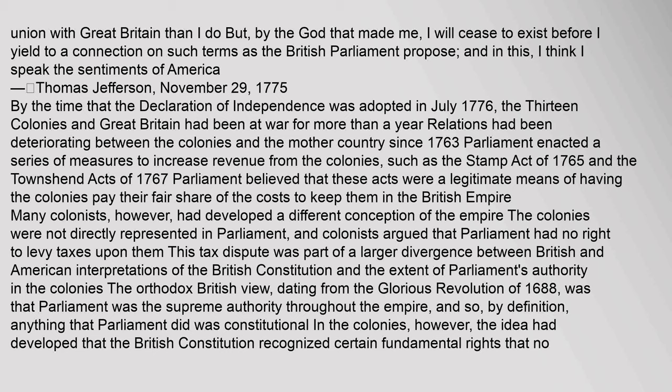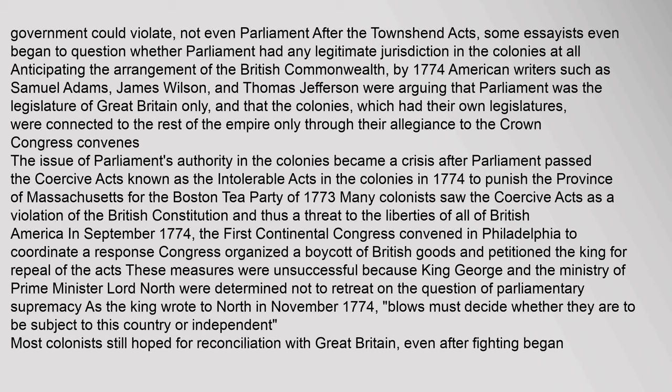The orthodox British view, dating from the Glorious Revolution of 1688, was that Parliament was the supreme authority throughout the empire, and so, by definition, anything that Parliament did was constitutional. In the colonies, however, the idea had developed that the British Constitution recognized certain fundamental rights that no government could violate, not even Parliament. After the Townsend Acts, some essayists began to question whether Parliament had any legitimate jurisdiction in the colonies at all, anticipating the arrangement of the British Commonwealth. By 1774, American writers such as Samuel Adams, James Wilson, and Thomas Jefferson were arguing that Parliament was the legislature of Great Britain only, and that the colonies, which had their own legislatures, were connected to the rest of the empire only through their allegiance to the Crown.